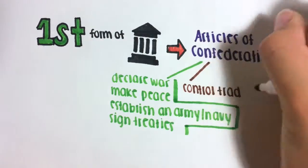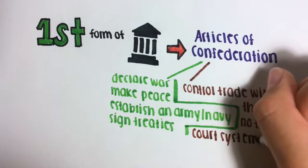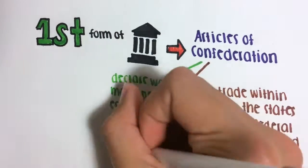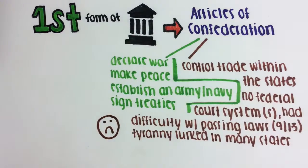But with many advantages comes many disadvantages. It couldn't control trade within the states, it had no system of federal courts, it had difficulty passing laws because 9 of the 13 states needed to approve legislation, and tyranny lurked among the states.